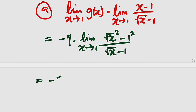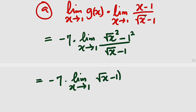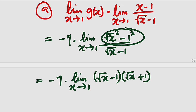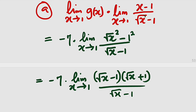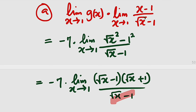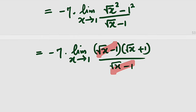This is equal to negative 7 multiplied by the limit as x approaches 1 of square root of x minus 1, multiplied by square root of x plus 1 — that is the factorized form of the difference of two squares — divided by the square root of x minus 1. From here, you can cancel the square root of x minus 1 in the numerator and denominator, leaving only the square root of x plus 1.